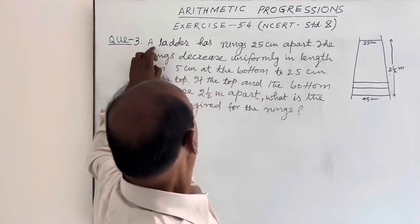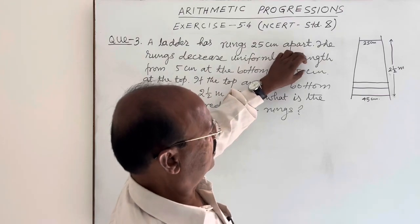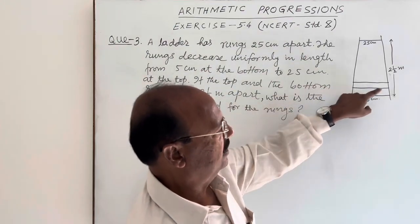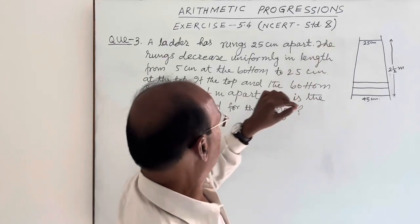Here the question is: a ladder has rungs 25 cm apart. These are known as rungs. So distance between rungs is 25 cm.